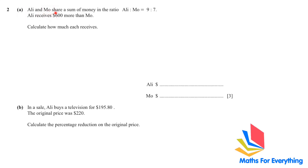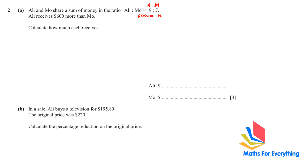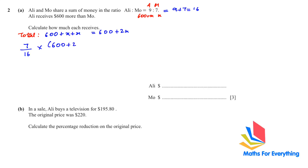Question 2a: Ali and Mo share a sum of money in the ratio 9 to 7. Ali receives 600 more than Mo. If Mo receives x, then Ali receives 600 plus x, and the total is 600 plus 2x. Mo receives 7 parts out of 16 total parts of the total amount (600 plus 2x). So the equation is: x over (600 plus 2x) equals 7 over 16.